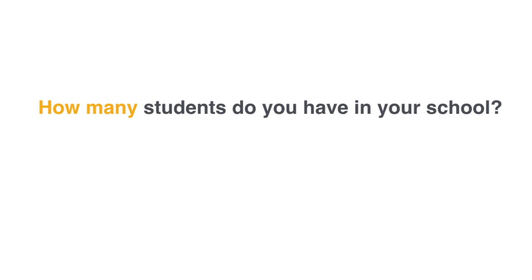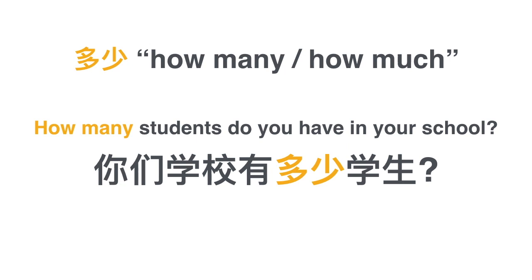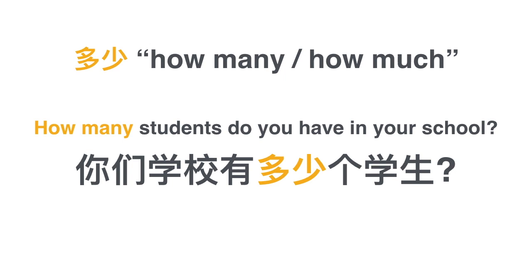For example, how many students do you have in your school? 你们学校有多少学生? 多少 can also be followed by a measure word like 个, the generic measure word. 你们学校有多少个学生? Or omitting the 个 is also fine: 你们学校有多少学生? Both are acceptable.